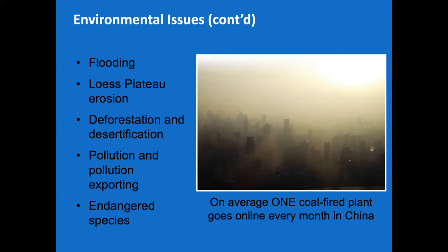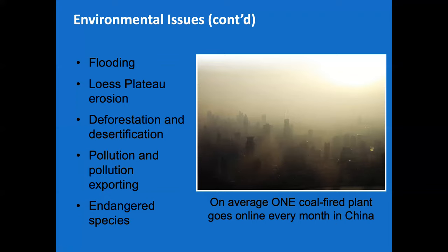Loess can find its way into eastern big cities like Beijing, Shanghai, and Hong Kong. China exports a lot of pollution — they are the biggest emitters of carbon dioxide in the world, because they are the fastest growing economy in the world. While China is doing a lot to develop alternative energy, they still rely quite a bit on coal, and that's really not going to change anytime soon.